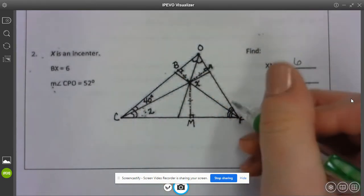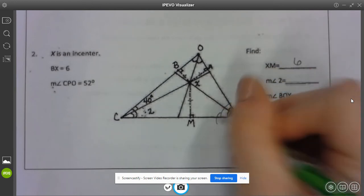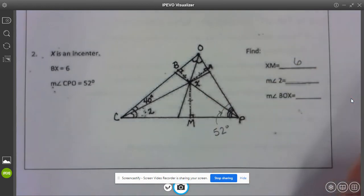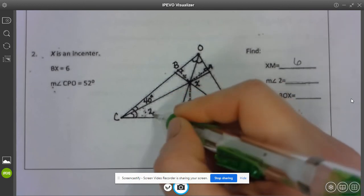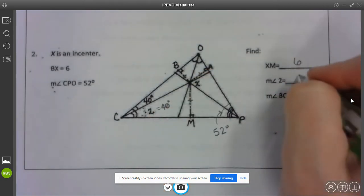CPO, so this big angle here is 52 degrees. Well since this is 40 I know angle 2 also has to be 40 degrees because they are bisected.